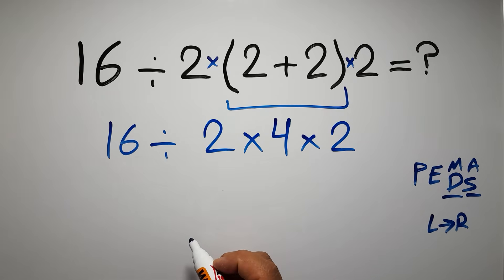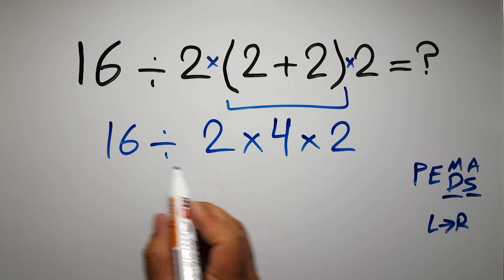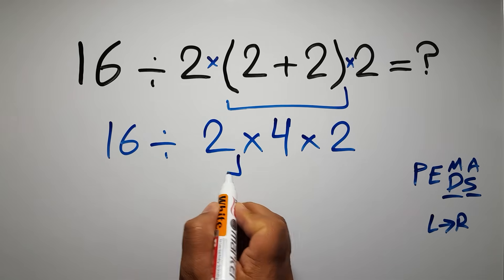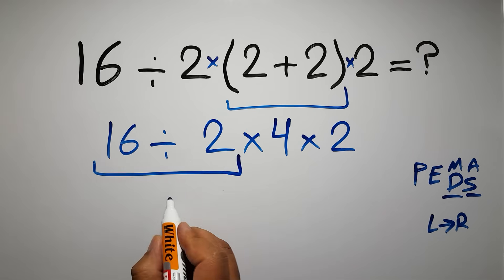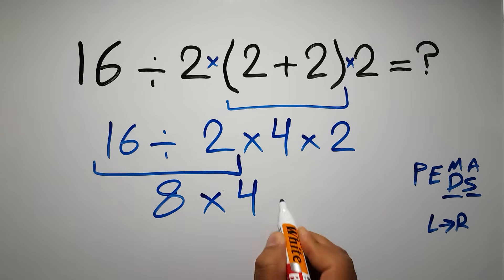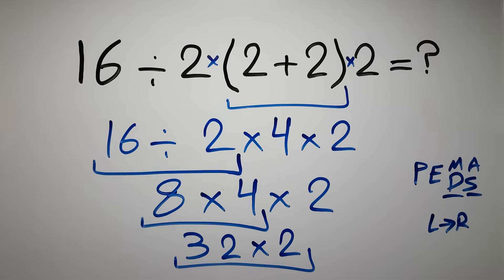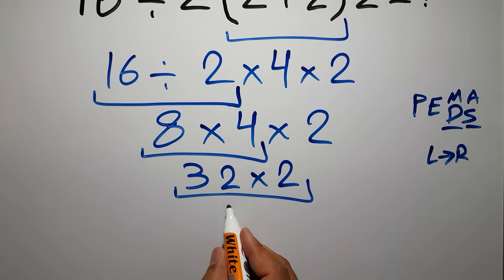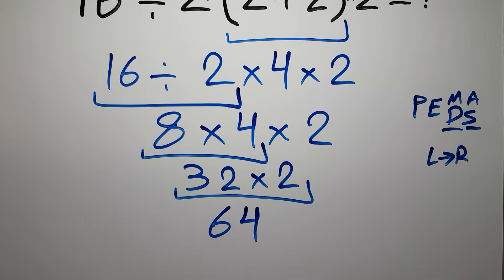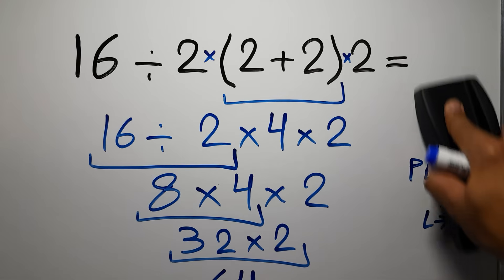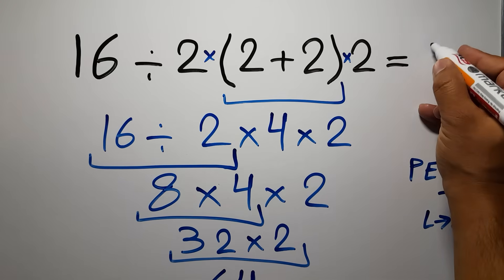from left to right. So in this step, first we do the division: 16 divided by 2 gives us 8. Then 8 times 4 gives us 32. So 32 times 2 is 64. This is our final answer to this problem. The correct answer is 64.